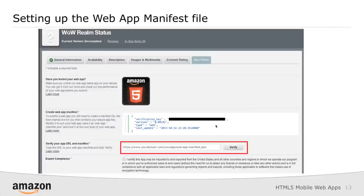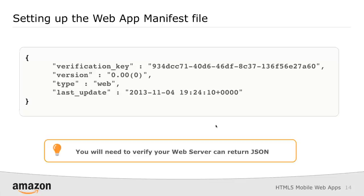When we go over to the App Files tab, we're going to have a new area called the web app manifest. What the web app manifest does is allow us to understand that you're the owner of whatever website you're pointing us to. These are mobile web apps hosted by you on your own web infrastructure — we're simply wrapping that into an Amazon or Android web view and hosting it in the App Store for you. You can see there's a verification key, and then I need to verify my app URL with that manifest. That verification key is like any other JSON file — you've got different key and ID pairs: a key, a version, a type, and when it was last updated.